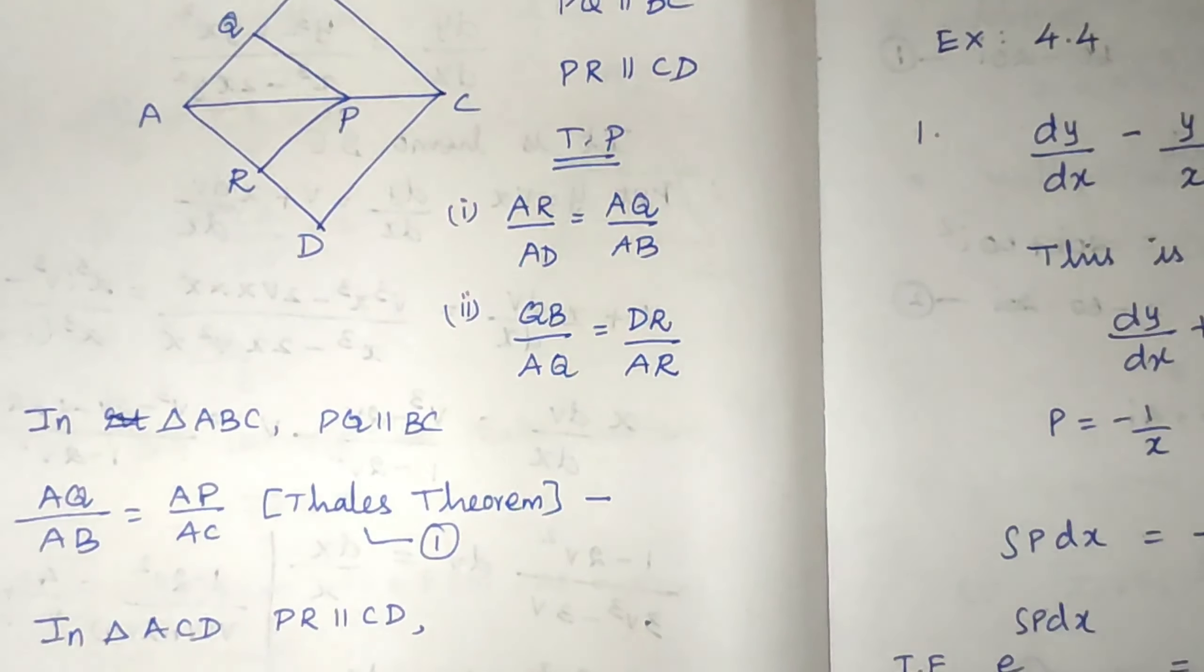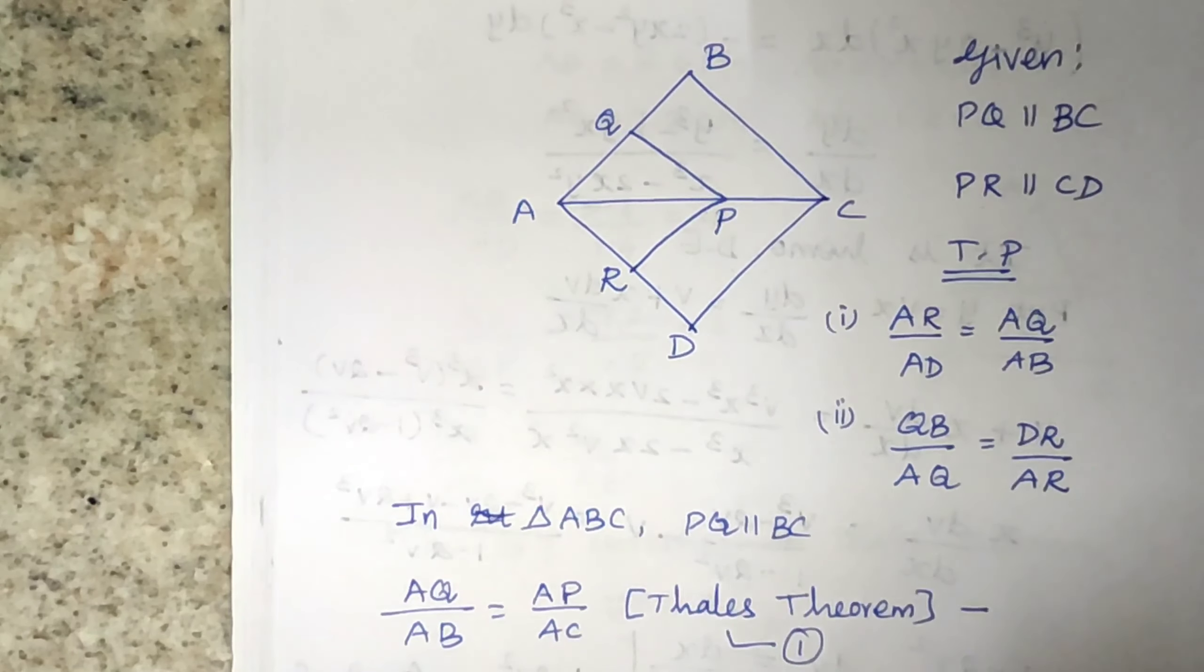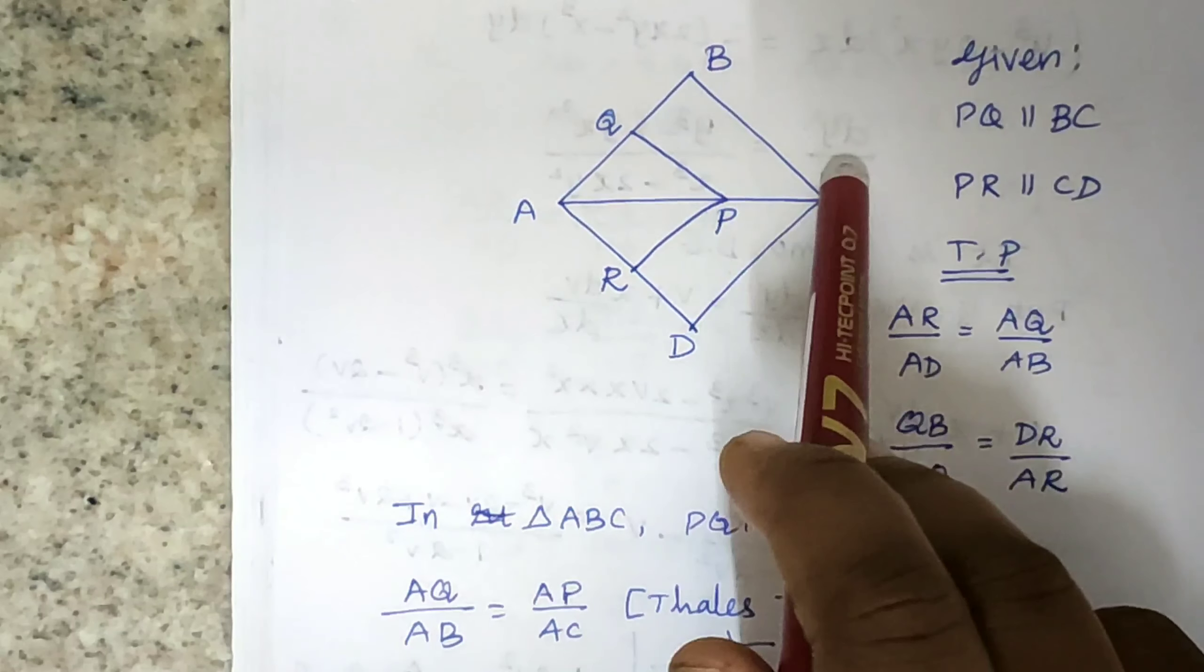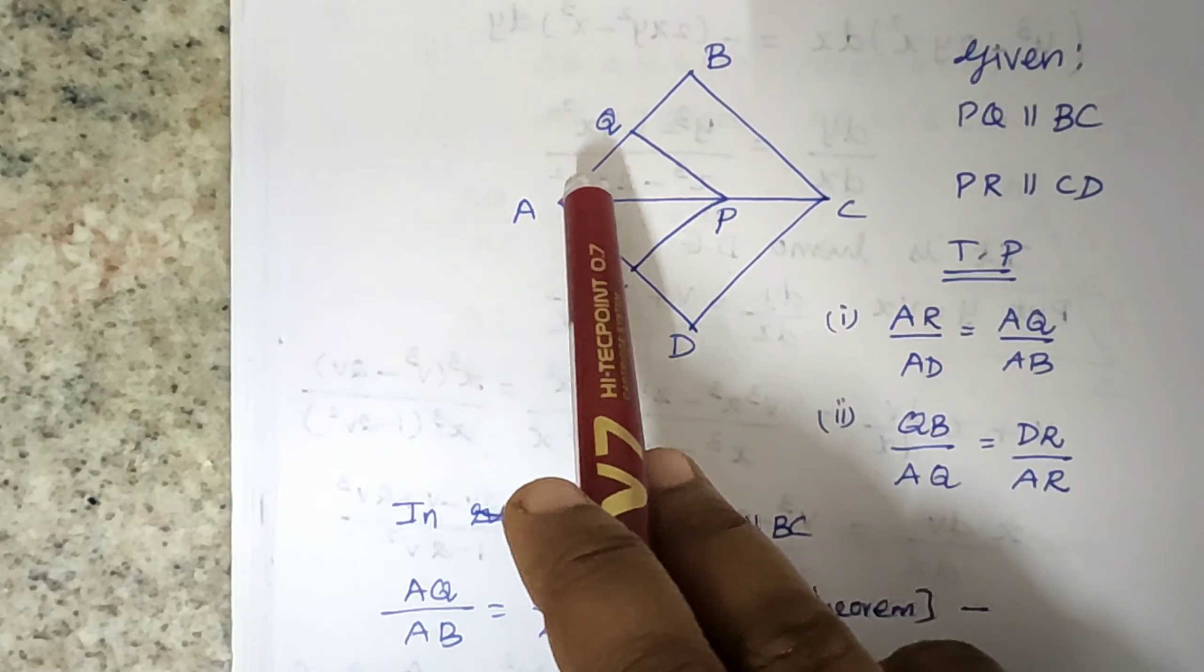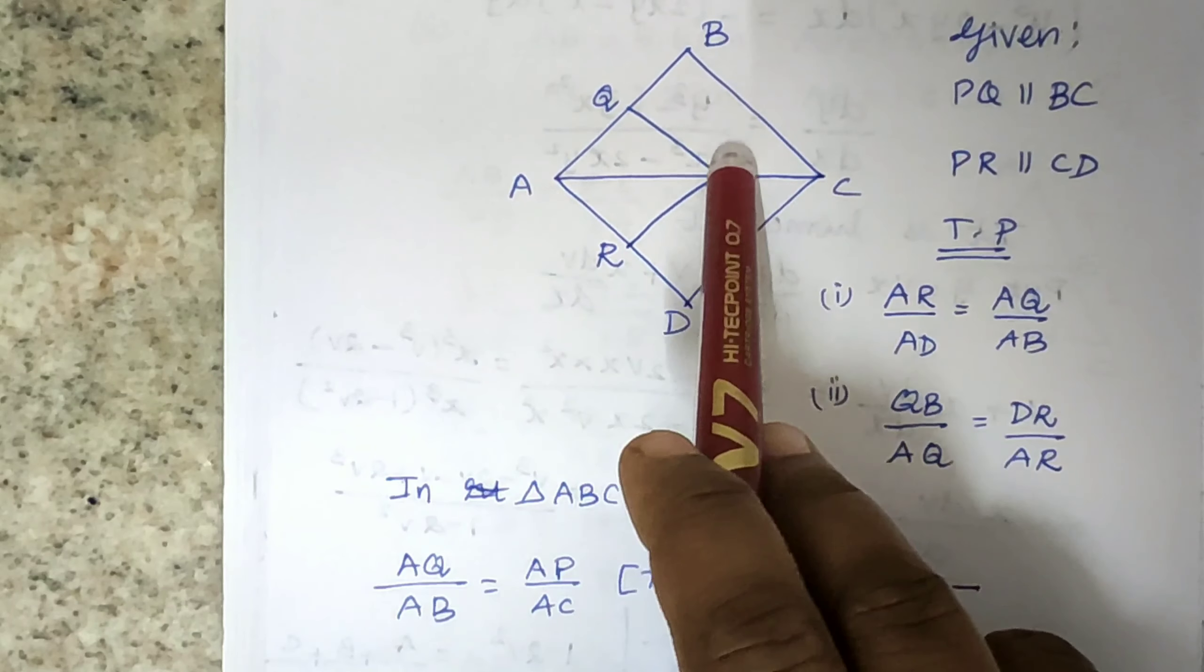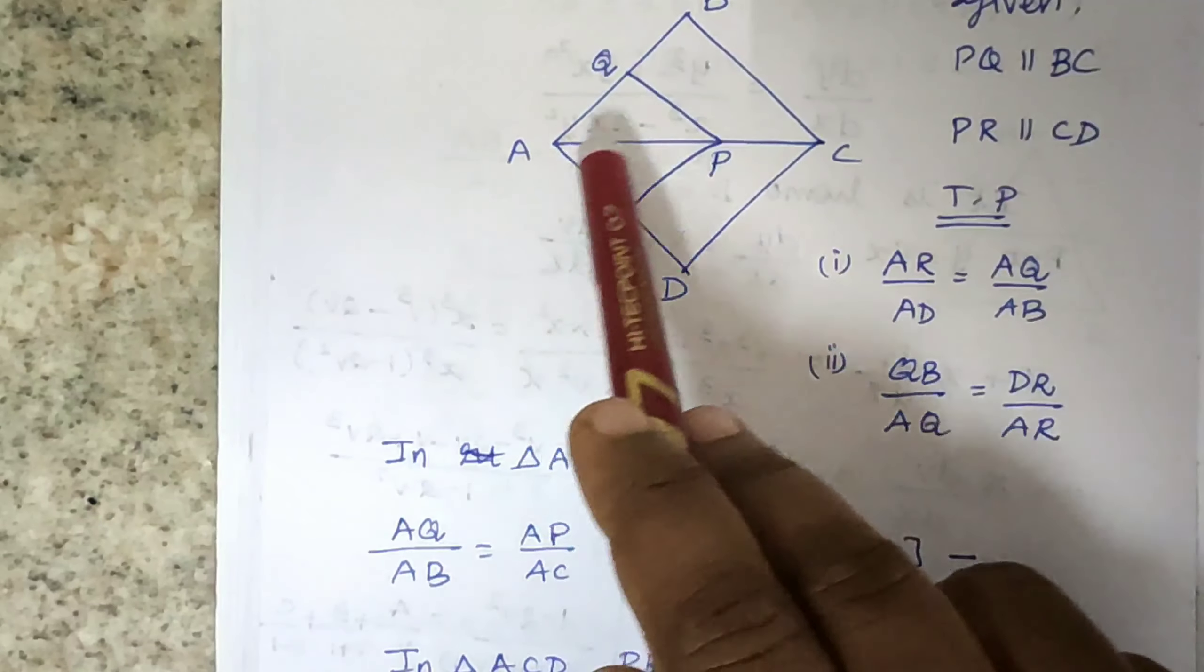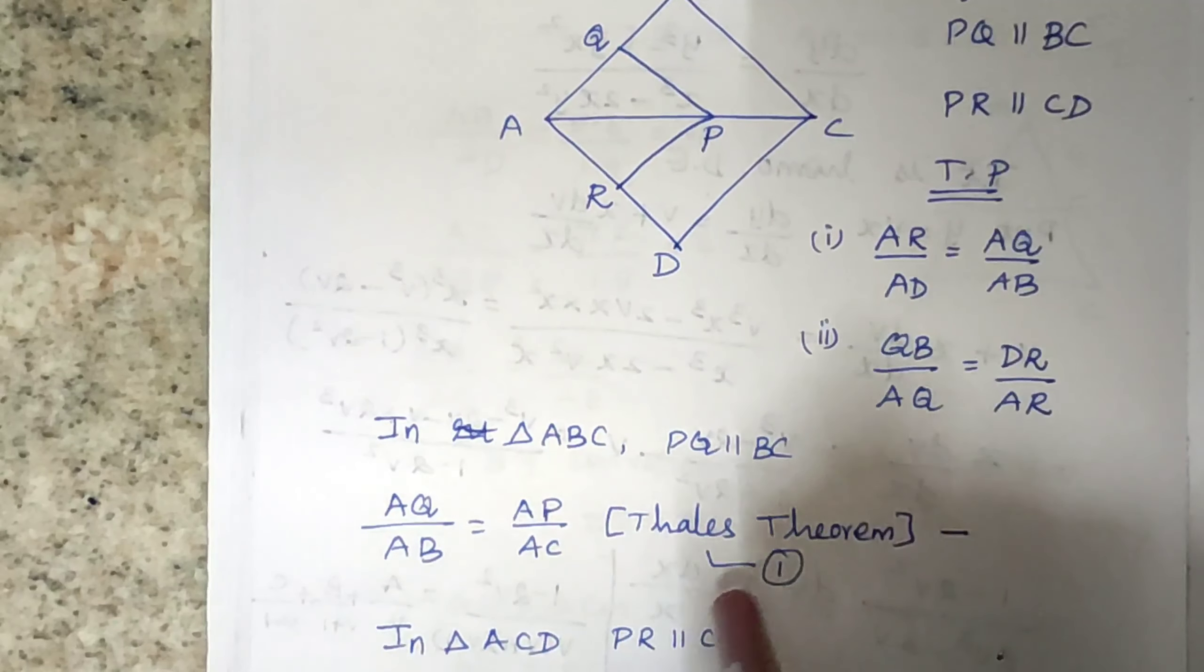We apply the Thales theorem, basic proportionality theorem. So AP by PC equals AQ by QB. This is AQ by QB equals AP by PC. So Thales theorem.